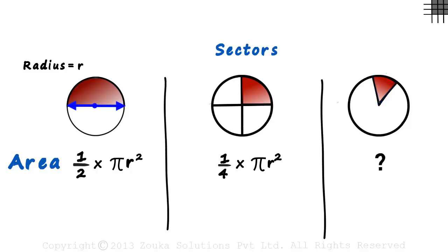In the first case, these are the two radii and this is the arc. In the second case, these two are the radii and this is the arc. And in the third case, the sector is covered by these two radii and this arc.